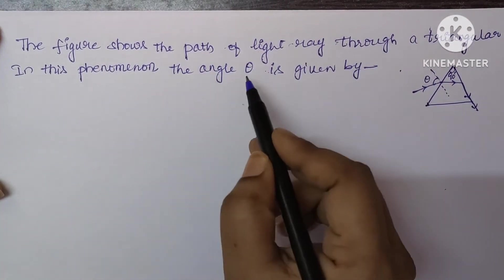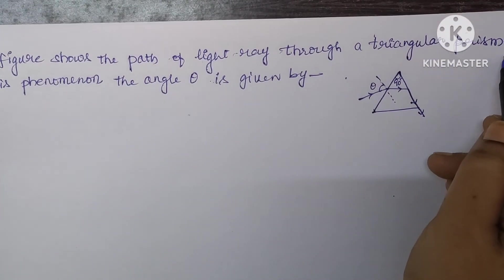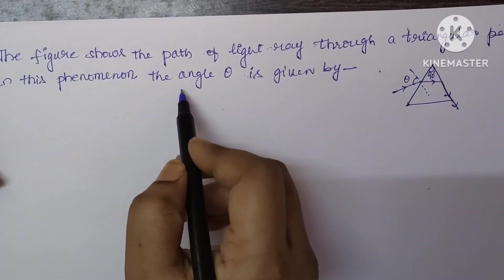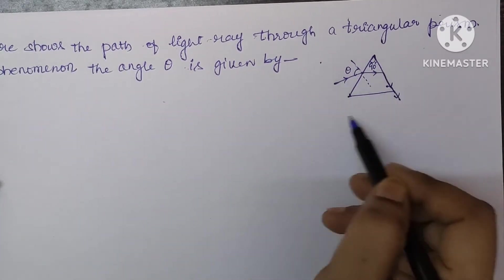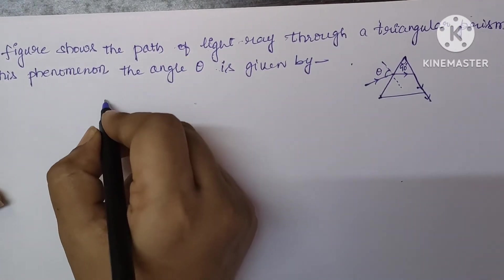Let's see. The figure shows the path of light ray through a triangular prism. In this phenomenon, the angle theta is given by. Here the diagram is given. I am going to redraw the diagram.